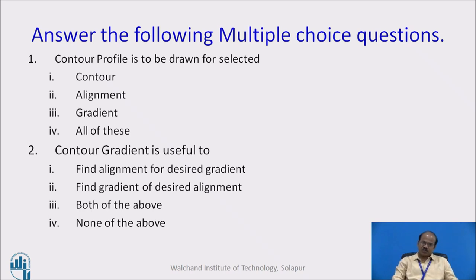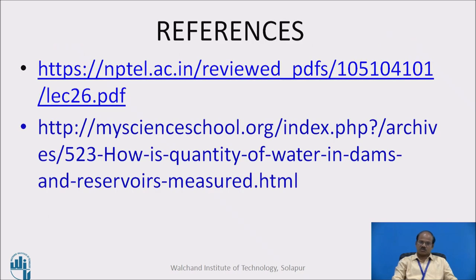This is a review of what we have learnt by now. Answer the following multiple choice questions. For this you need to pause your video and answer them, then correct answers will be elaborated by me. The first question is: contour profile is to be drawn for selected — first option is contour, alignment, gradient, and all of these. The second question is: contour gradient is useful to — first option is find alignment for desired gradient, find gradient of desired alignment, both of the above, and none of those. The answers are very clear. For the first question, the answer is: contour profile is to be drawn for selected alignment. For the second question, the answer is: contour gradient is useful to find alignment for desired gradient. I have used these references.